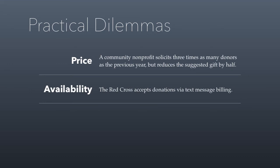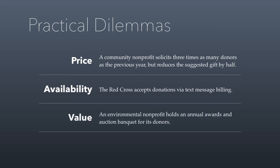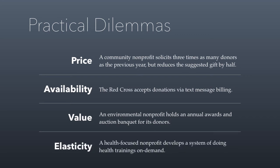For availability, the Red Cross accepts donations via text message billing — this became a big deal when the Haiti earthquake struck. The Red Cross raised about a billion dollars in response to that disaster, partly because people were able to donate via text message. Increasing value: an environmental nonprofit that holds an annual awards and auction banquet for its donors is increasing the value, so donors get more out of their donations and would hopefully be willing to donate more. For elasticity — substitutability — a health-focused nonprofit that develops a system of doing health trainings on demand creates new altruistic opportunities that are cheaper and better for donors.